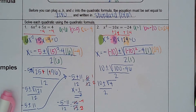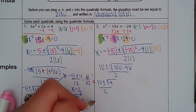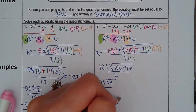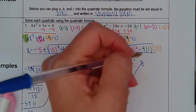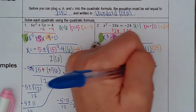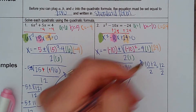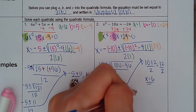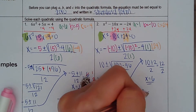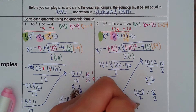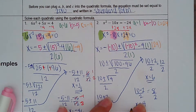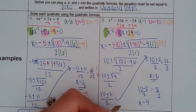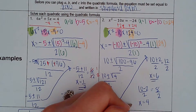The square root of 4 is 2, so I have 10 plus or minus 2, all over 2. I have two problems to solve: 10 plus 2 over 2 is 12 over 2, which gives me x equals 6. And 10 minus 2 over 2 is 8 over 2, which gives me x equals 4. So my answers — my x's, my roots, my solutions, my x-intercepts, my zeros — would be x equals 6 and x equals 4.